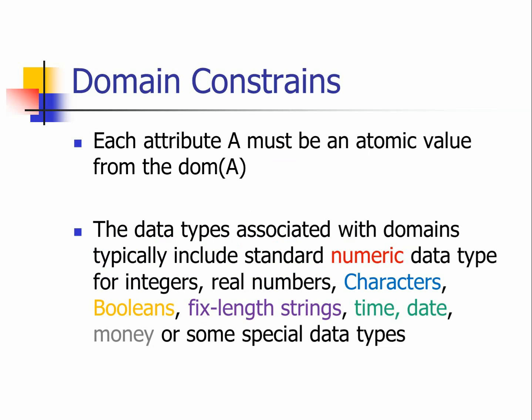Each attribute has its own domain. The data type associated with the domain typically includes the basic data types we understand in our programming languages. They include numerical data types for integers, real numbers, decimal numbers, floating numbers, and precise numbers. It can also be characters, boolean, fixed length strings, time, date, money, etc.